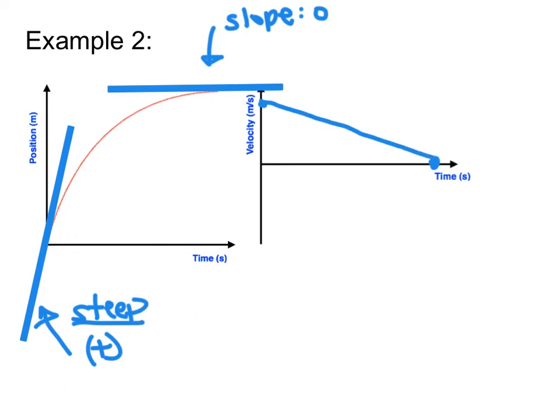Based on this, what can we tell about its motion? We can tell that it's moving forward because it's in the positive region. We can also tell that its velocity is decreasing — we start with a very positive velocity and end up with a velocity of zero — so we know it's slowing down.